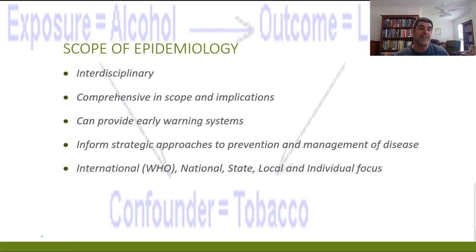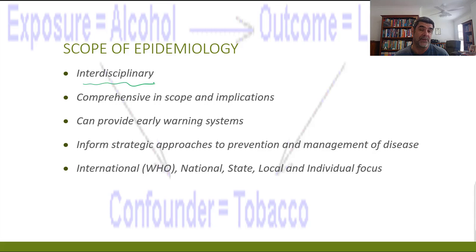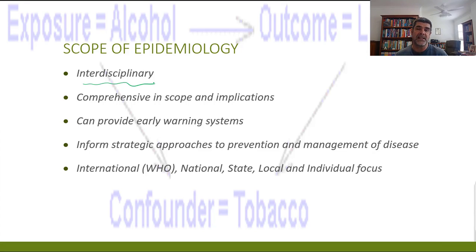What is it about the scope of epidemiology that makes these sorts of studies so very important? Well, firstly, they are interdisciplinary. That is a really important thing because there are a lot of different aspects that come together — not just aspects of health. There are aspects of government policy, aspects of education, and aspects of economy. Each of these has something to say or maybe something to gain from the outcome of certain types of epidemiological studies.